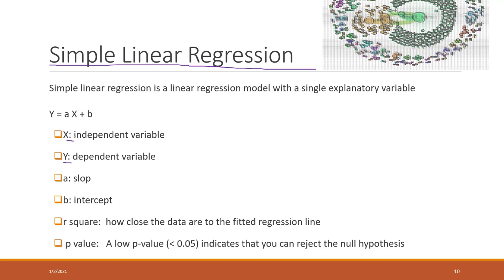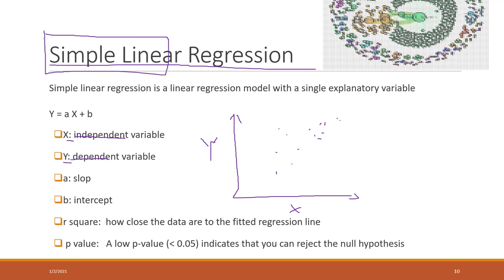X is the independent variable, and Y is the dependent variable. If we put X and Y on a chart, we have some points, and we will assume that X and Y have a simple linear relationship. We are looking for the best straight line that can fit with the data — looking for the slope, which is A, and also the intercept, which is B.